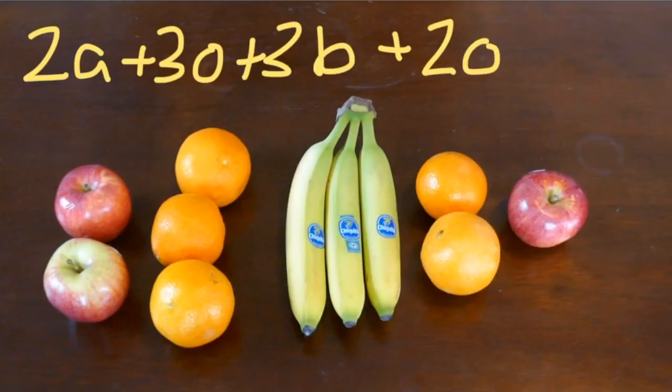So if I write out the expression as 2a + 3o + 3b + 2o + a, the reason why like terms are so important is you can only group or simplify like terms together.